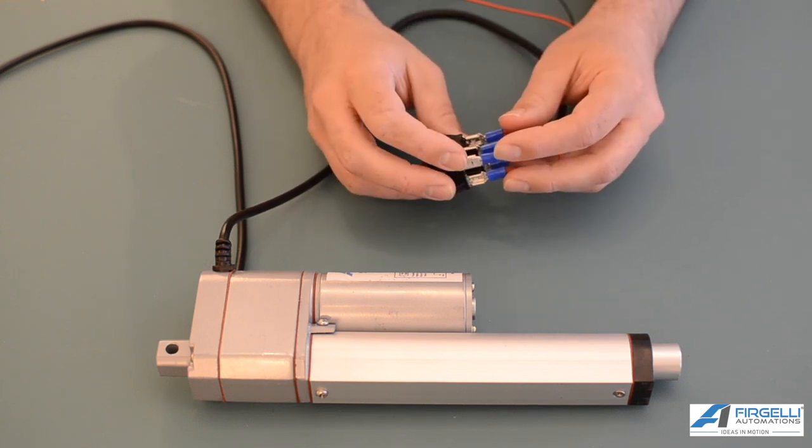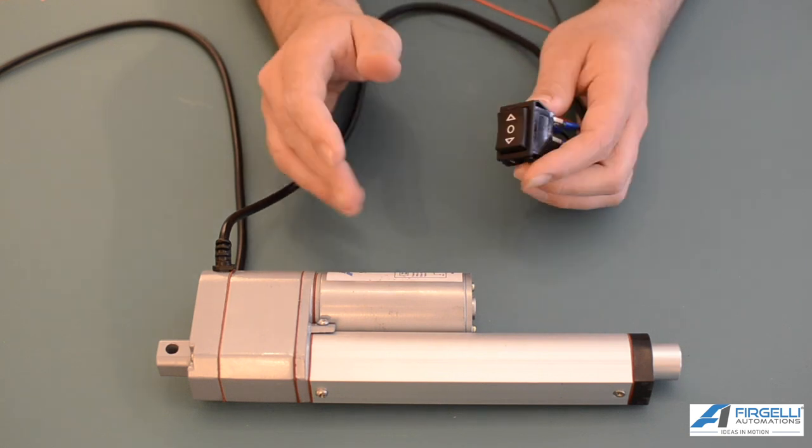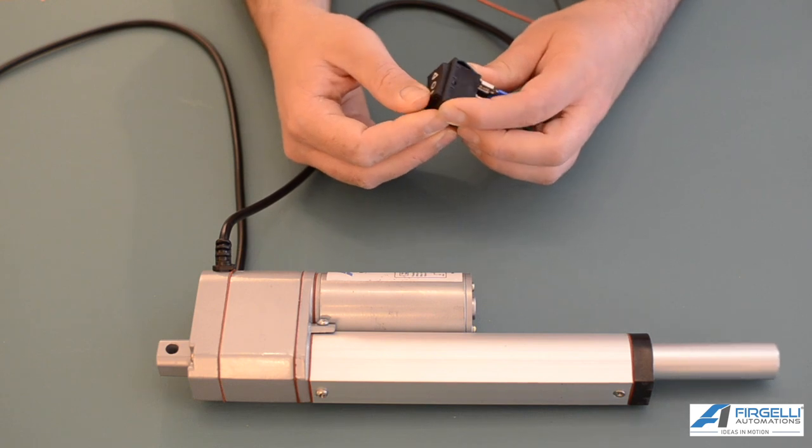You can solder these connections if you like but I'm just using these clips in this demonstration. Once everything's wired up safely you should be good to go and your linear actuator should move.